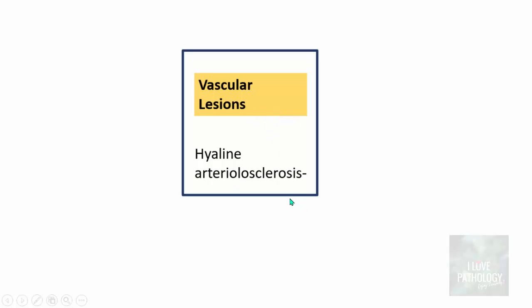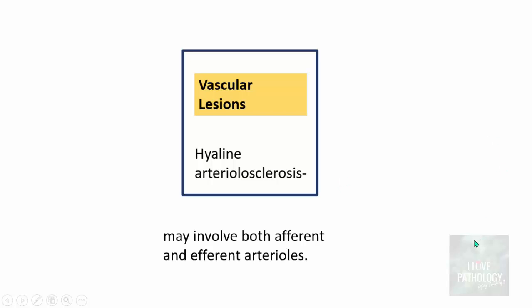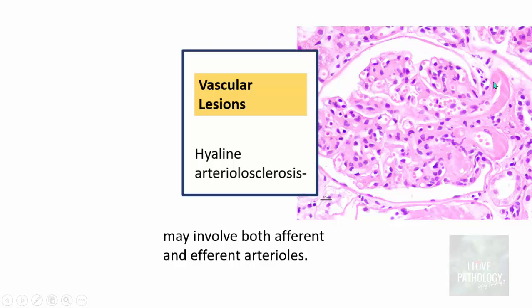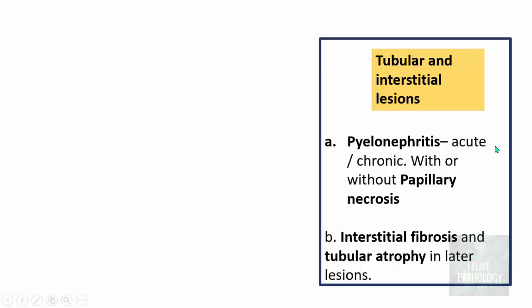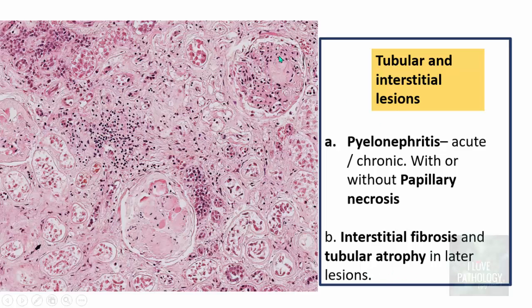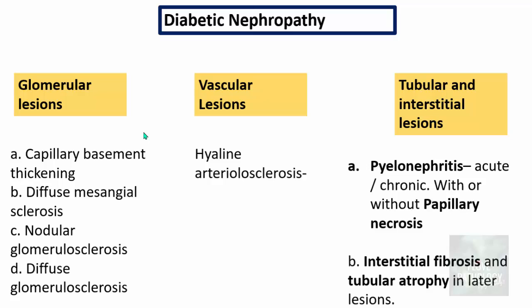For vascular lesions, the most predominant feature is hyaline arteriolosclerosis, which may involve both afferent and efferent arterioles — hyalinization of both vessels is a characteristic feature. Tubular and interstitial lesions include pyelonephritis (acute or chronic with or without papillary necrosis), interstitial fibrosis, and tubular atrophy in later lesions. On histology, nodular glomerulosclerosis, completely sclerosed glomeruli, and chronic inflammatory cell infiltrates in the interstitium consistent with chronic pyelonephritis can be identified.